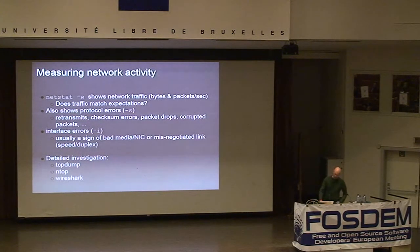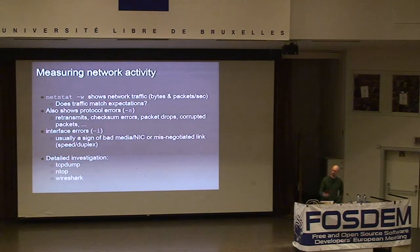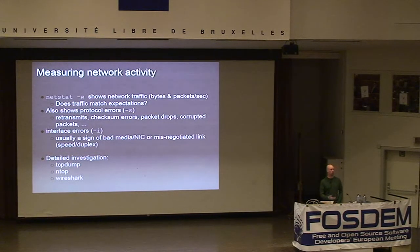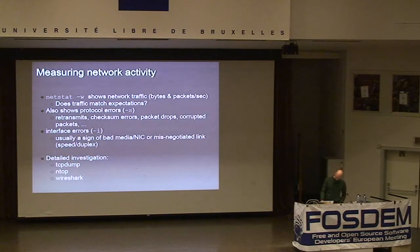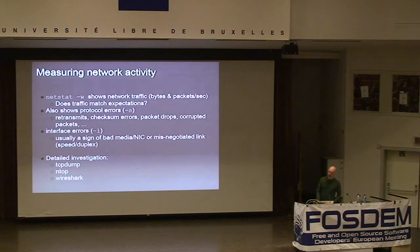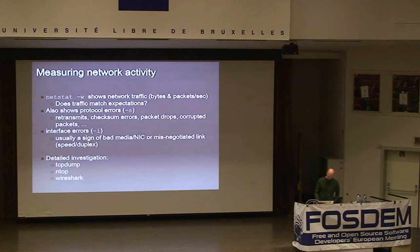Depending on the hardware, a bad switch can misnegotiate duplex settings or line rate settings, giving very bad performance on that link. There are various tools for studying the network in detail: tcpdump is the classical one, ntop is quite useful showing per-process traffic on the local machine, and Wireshark is a very detailed tool for packet and protocol decoding.